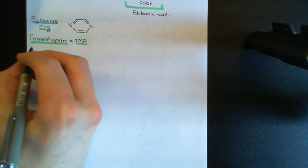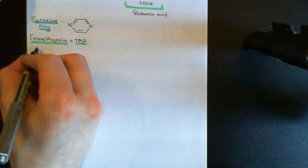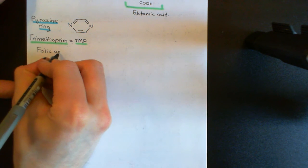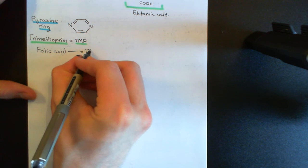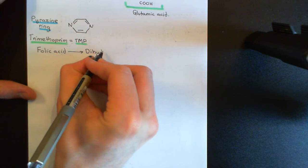Folic acid is important in bacterial cells because we need it for the enzymes that make the nucleotides of DNA and RNA to actually work. But that's an oversimplification — I'm going to make the story slightly more complicated and closer to the truth. It is not folic acid quite that those enzymes need. Instead, they need a form of folic acid known as tetrahydrofolate, or tetrahydrofolic acid.